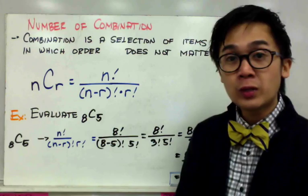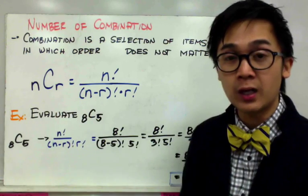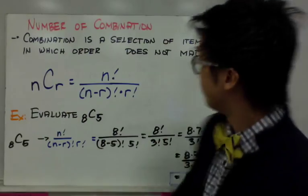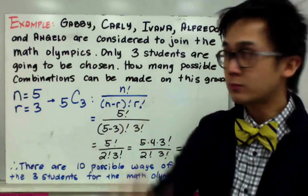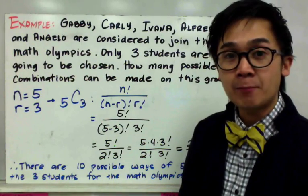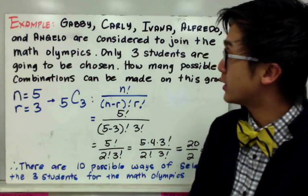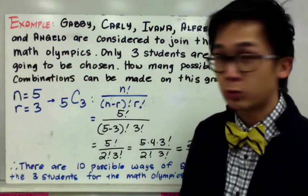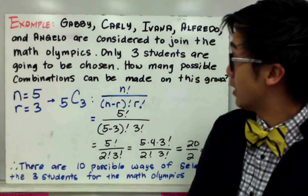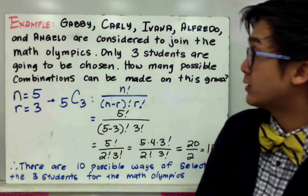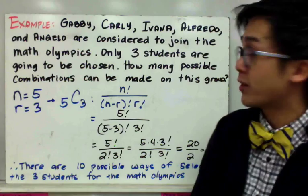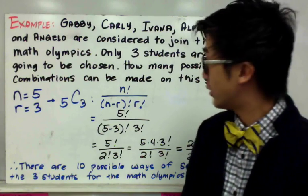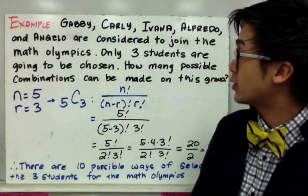Now how do we apply combination to a word problem? In this example, we have Gabby, Carly, Ivana, Alfredo, and Angelo who are considered to join the Math Olympics. However, only 3 students are going to be chosen. How many possible combinations can be made from this group?